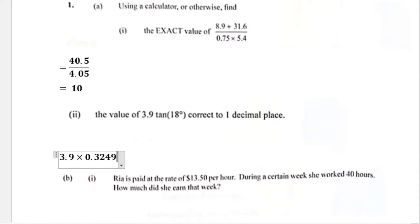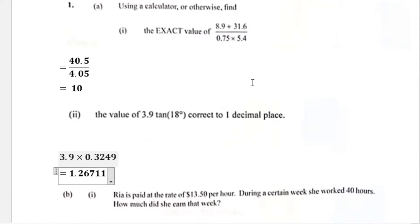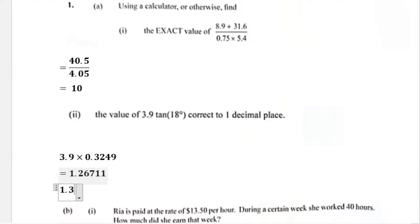When you perform 3.9 multiplied by 0.3249 you get 1.26711, but that is not our final answer because the instruction says to write it correct to one decimal place. Our cutoff is after the first decimal digit, which is 2. We look at the digit that follows — it is 6, which is greater than or equal to 5, so we add 1. Therefore our final answer is 1.3.